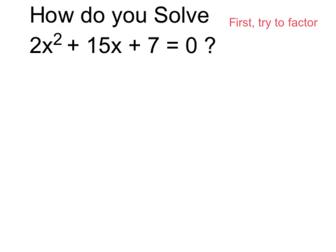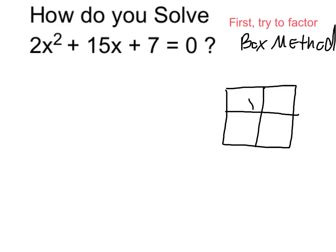So I'm going to try to factor the trinomial using the box method. You might recall in the box method the x squared terms go here, the constant terms go in the bottom box here, and the x terms are going to go here.